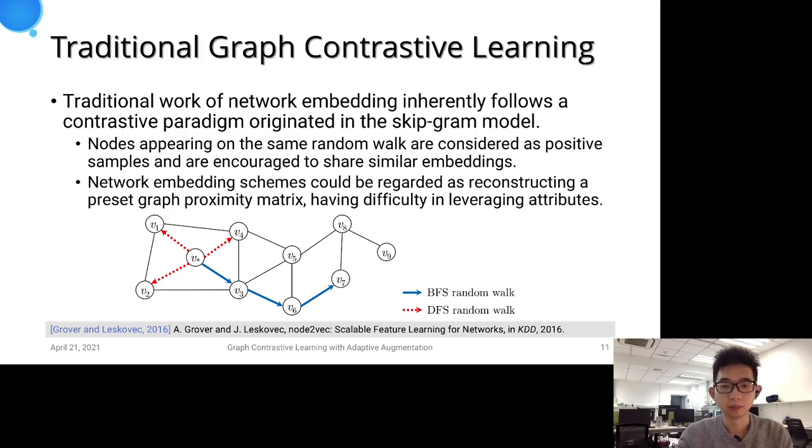Node2Vec first samples short random walks and then enforces neighboring nodes on the same walk to share similar embeddings by contrasting them with other nodes. These traditional node embedding approaches could be seen as factorizing a proximity matrix which have difficulty in leveraging node attributes.